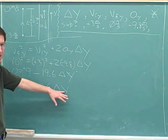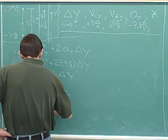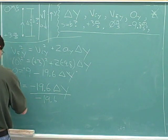The 19.6 is multiplying by the delta y, so we need to divide. That's the opposite. We should divide by negative 19.6, because that's the number we want to move.